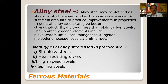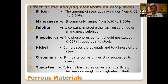Main types of alloy steels used in practice are stainless steel, heat-resisting steel, high-speed steel, and spring steels. The effect of alloying elements: silicon content usually ranges from 0.05% to 0.30%. Manganese commonly ranges from 0.30% to 1%. Sulfur is present as iron sulfide or manganese sulfide. Phosphorus should not exceed 0.05% in good quality steel. Nickel increases strength and toughness. Chromium imparts corrosion-resisting properties. Tungsten forms hard abrasion-resistant particles and increases strength and elastic limit.